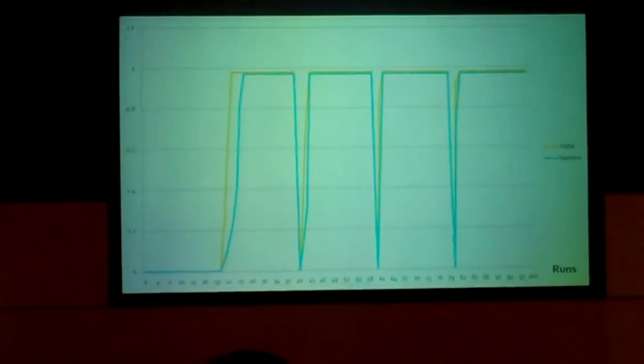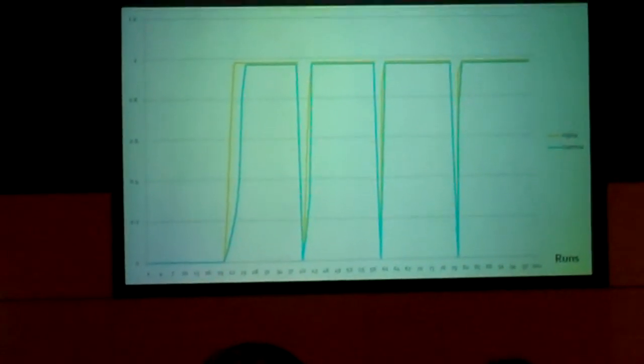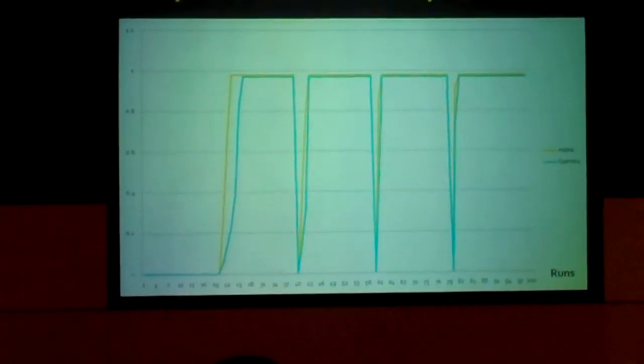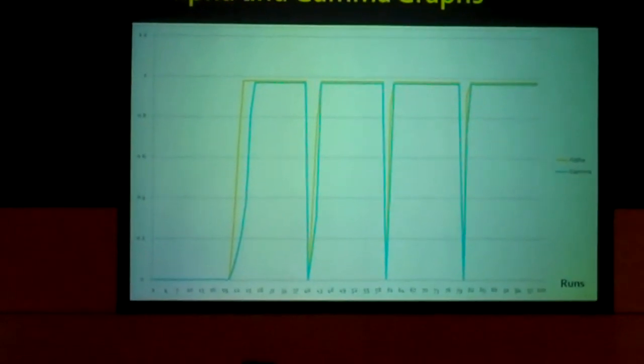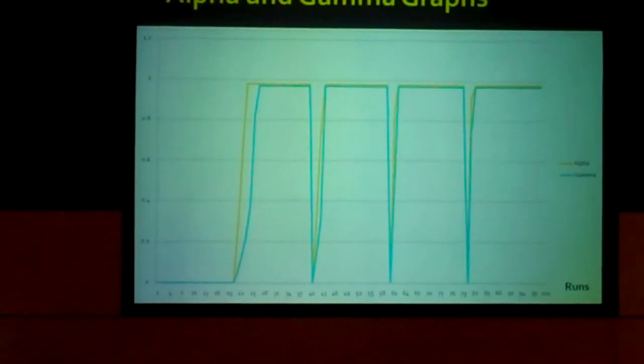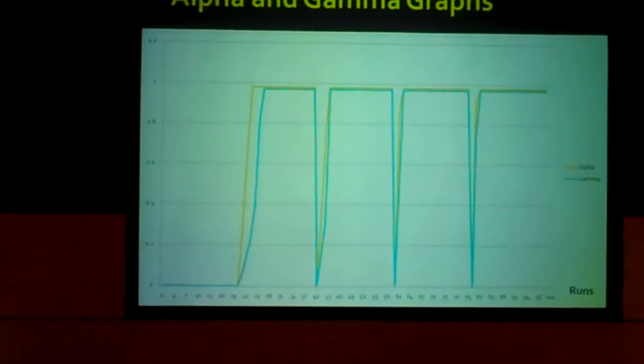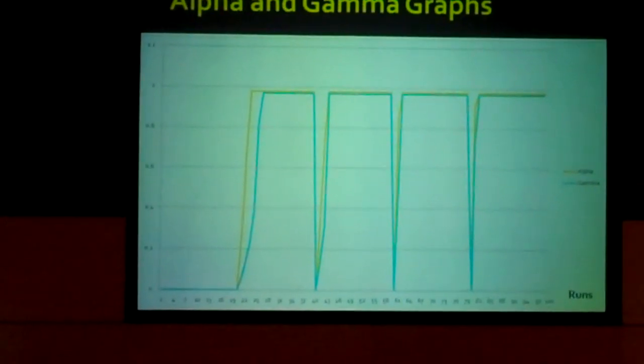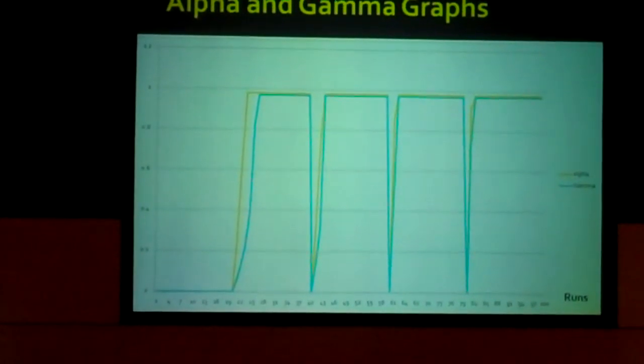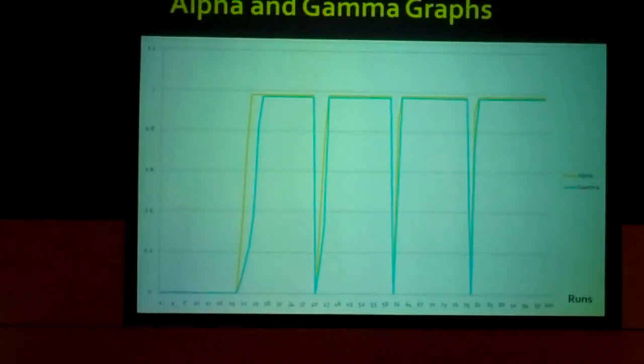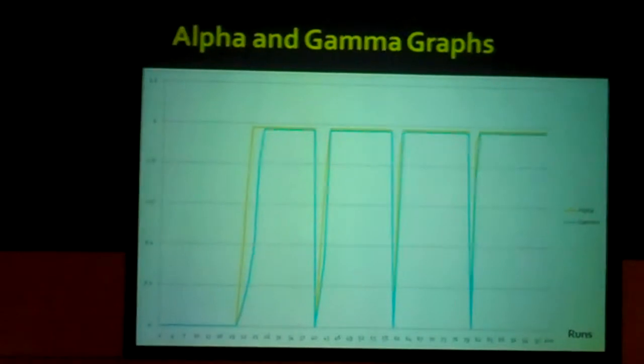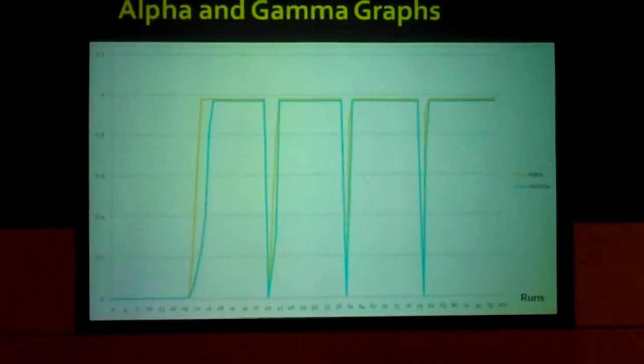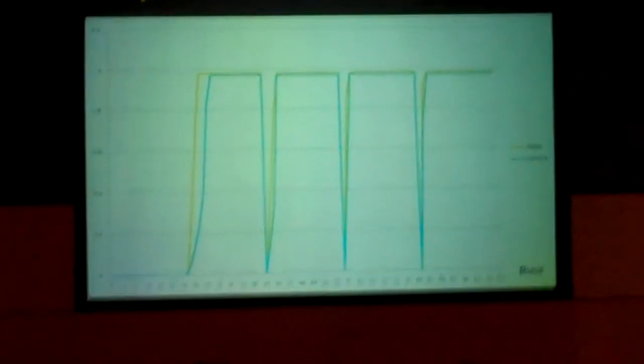So I simulated alpha and gamma. Alpha is the orange line and gamma is the blue line. And the alpha values are greater than the gamma values because the time it takes to go from one core to another core is far less than the time it takes to go from one machine to another machine. And then these drops here are system reboots or crashes I simulated in to show how much faster the system reboots after it's been run.